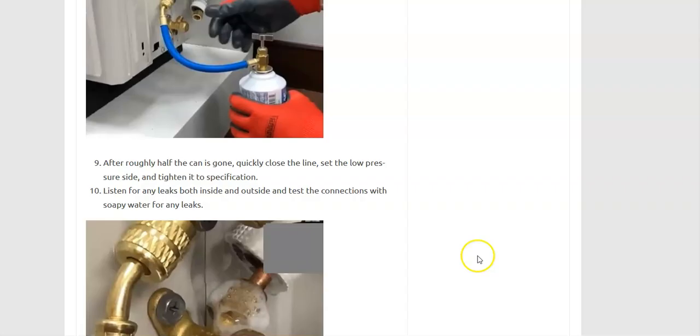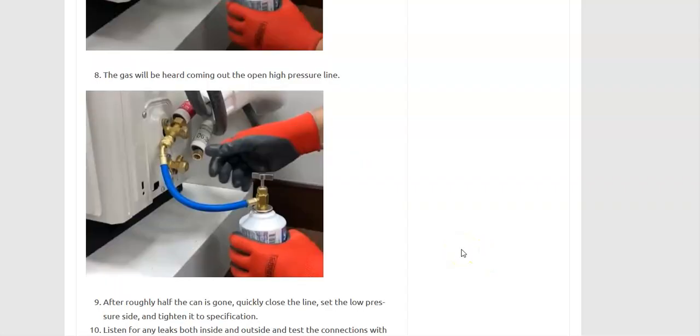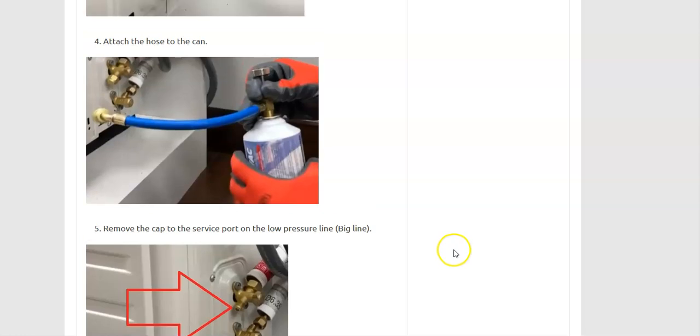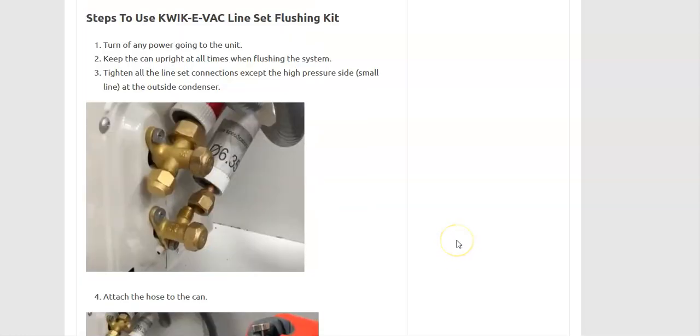This is supposed to blow out all the air and any small particles. You let it blow out for a short while, like five to ten seconds or whatever the instructions say. Then you bolt on that last connection on the high pressure side. Since the can is still open and pushing into it, it also pressurizes everything, so you can test for any leaks with soap and water. That's the basics of this Quickie Evac line set flushing kit.